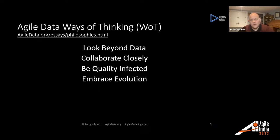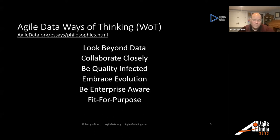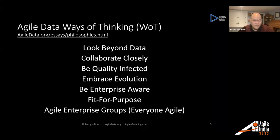We need to embrace evolution — we will not get it right the first time. We need to do architecture, design, and requirements continuously throughout the lifecycle, not up front. We need to be enterprise aware and do what's right for the organization, not just what's convenient for our project team. We need a fit-for-purpose approach — every team is different, every organization is different, one size does not fit all. And everybody should be agile, not just development teams.